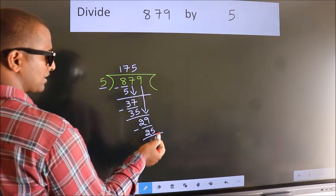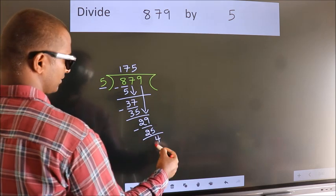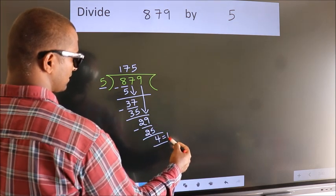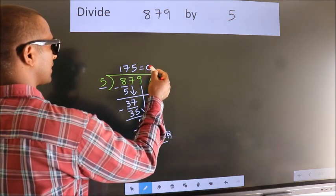No more numbers to bring down. So we stop here. This is our remainder. This is our quotient.